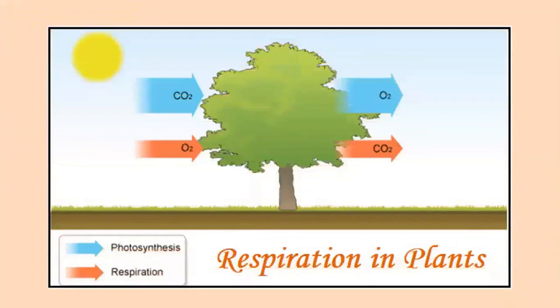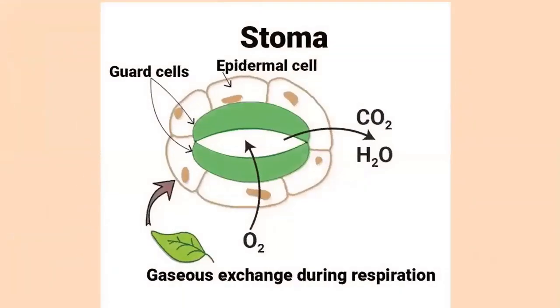This means that plants also need oxygen to survive like us, and they respire through tiny pores on the surface of their leaves called stomata. Oxygen enters the plant while carbon dioxide leaves the plant through these pores.